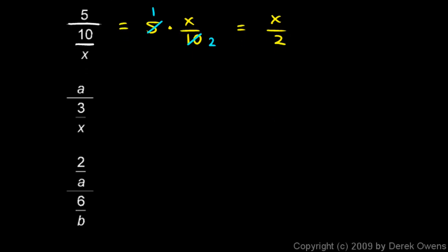Here's some more examples. A divided by three over x. That will be the same as a times x over three. And you can think of the a as being an a over one. And this would be a times x over three. That's how we would write the answer.